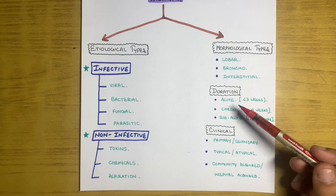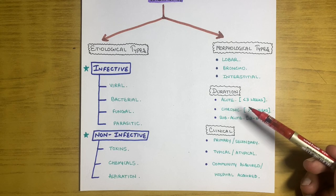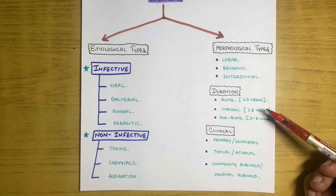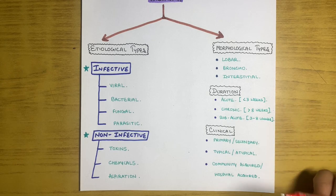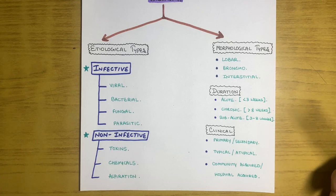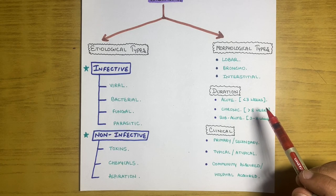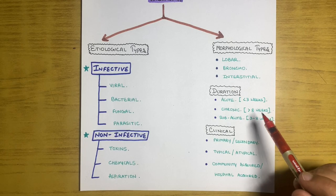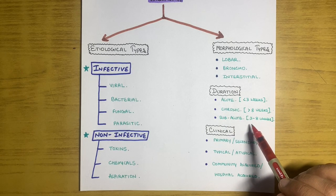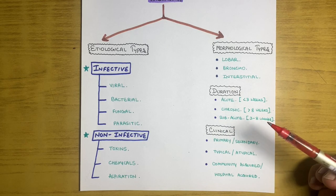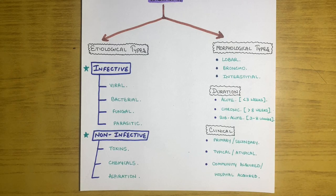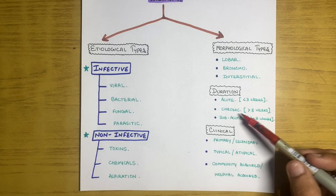On the basis of duration, pneumonia can be acute, chronic, or subacute. Acute means the pneumonia subsides within three weeks — the patient receives medicine and the pathogen is cleared from the body within three weeks. If it subsides from three to eight weeks, it is subacute. And if it persists longer, it is chronic pneumonia.